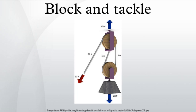An ideal block and tackle with a moving block supported by N rope sections has the mechanical advantage where FA is the hauling, or input, force and FB is the load.